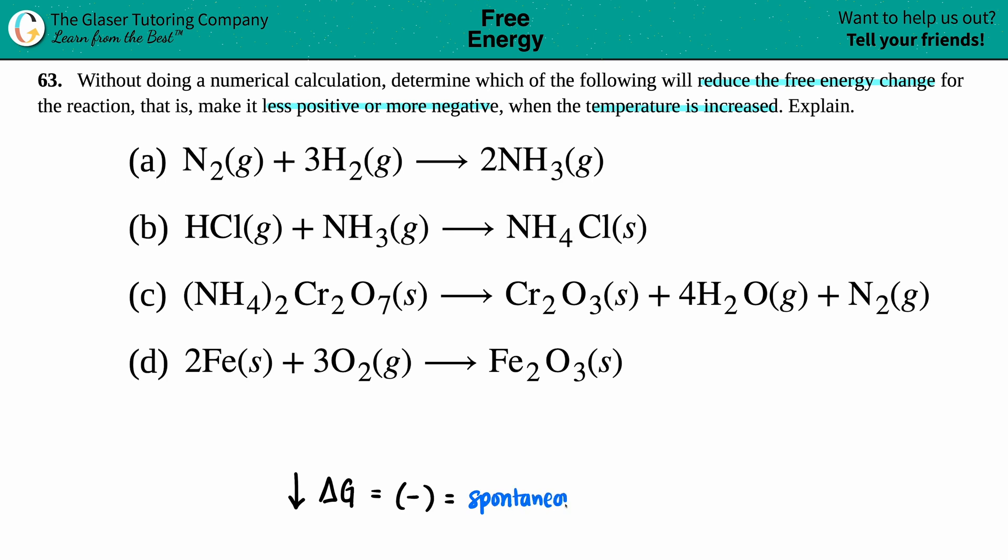So we can basically think about this question as which one of these may produce a spontaneous reaction when the temperature is increased. So as your delta G is dropping, we want our temperature to increase, or which one of these, as the temperature is rising, will bring that delta G down.